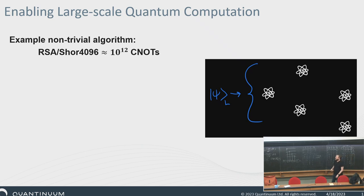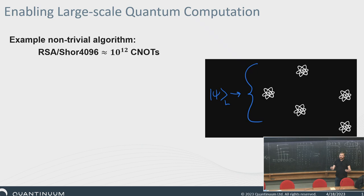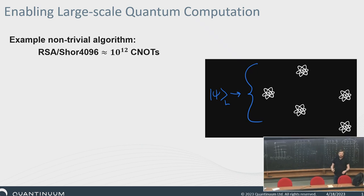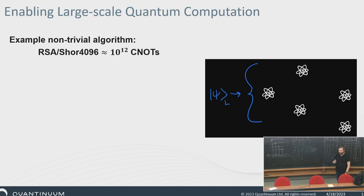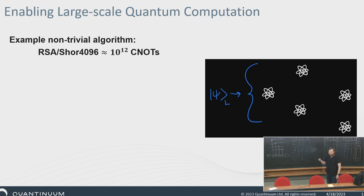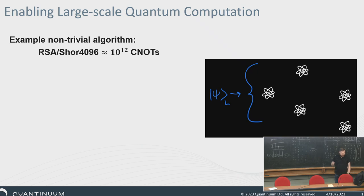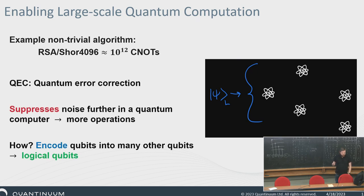We're kind of living in the NISQ era — noisy intermediate scale quantum computing. But eventually we want to tackle currently intractable, difficult problems. For example, breaking RSA using Shor's algorithm might need roughly 10^12 CNOTs, which means you need an error rate of less than 10^-12. Those are really small numbers and hard to get — there are real limits both from control accuracy and from physics. So you need something else, and the main consensus is that we need quantum error correction.